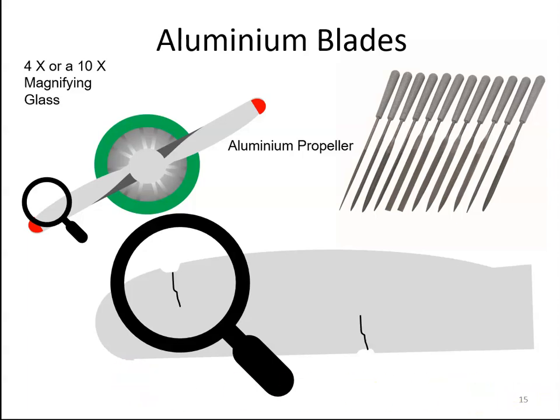Defects on the leading and trailing edge of a blade may be dressed out by the use of needle files, such as these files here. The idea is that the repair should blend in smoothly with the edge and should not leave any sharp edges or any sharp angles.